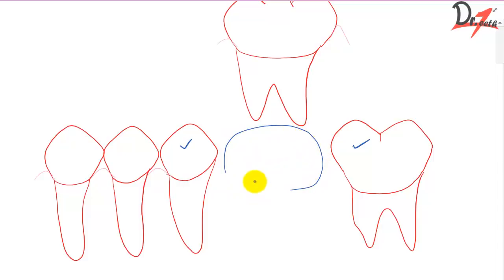Means the artificial teeth which we'll place here, it will be supported by this tooth here and this tooth here. So these two are the abutment teeth because they are supporting the prosthesis.